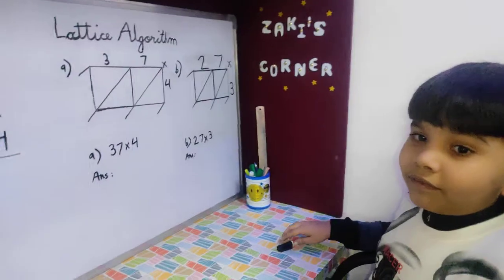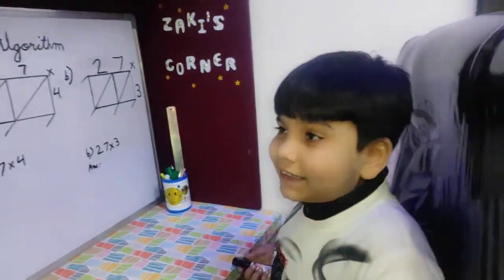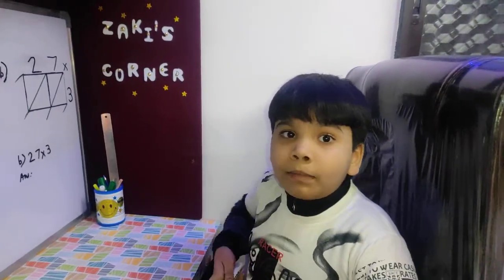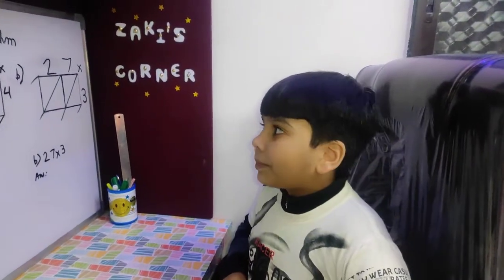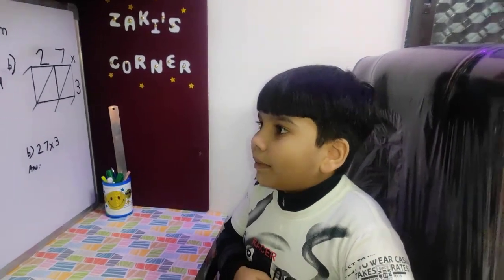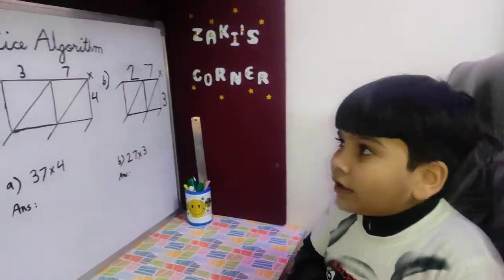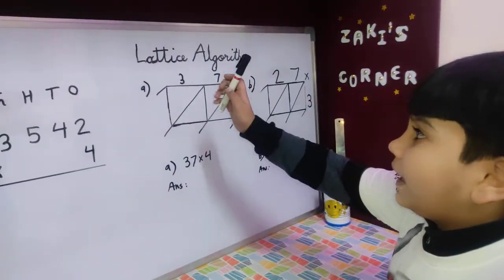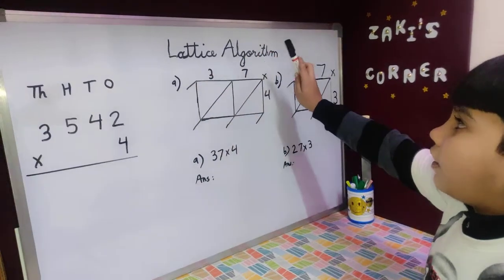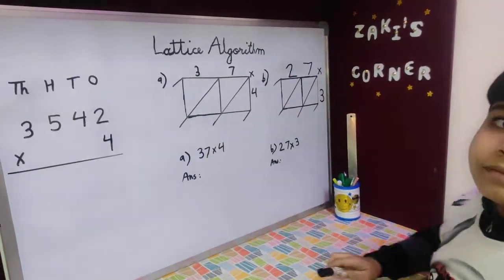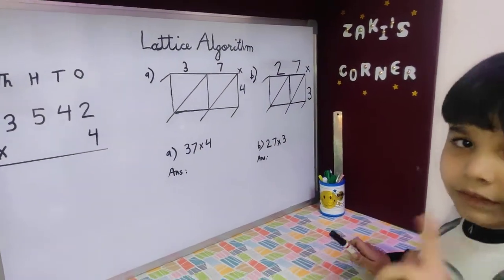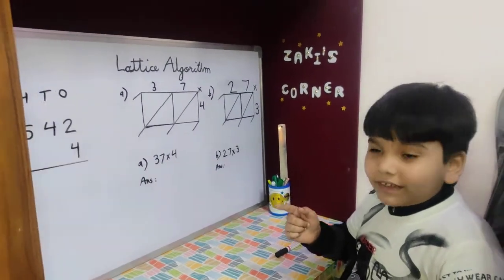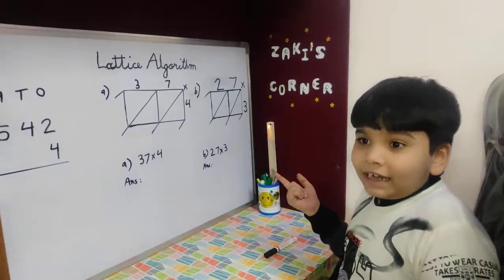We have completed yesterday's topic called Rounding of Numbers. And in today's topic, we are going to learn how to multiply numbers using the lattice algorithm. But first, we have to learn what is the lattice algorithm.